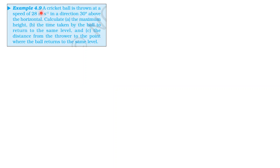Example 4.9. A cricket ball is thrown at a speed of 28 meters per second in a direction 30 degrees above the horizontal. Calculate the maximum height.